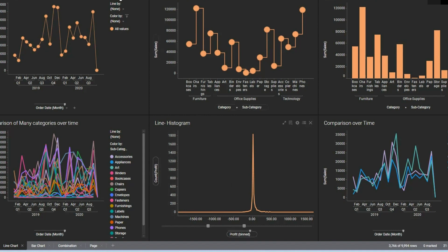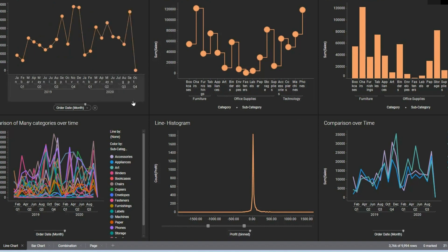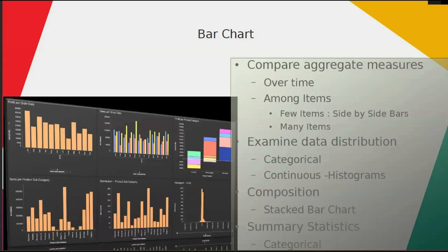The conclusion: the line chart is all about finding patterns in the data. Bar charts are simple visualizations to compare aggregate measures over time or among items. They are used for examining data distributions — categorical or continuous — for comparing compositions as a stacked bar chart, and for providing summary statistics of categorical values. Bar charts are the primary utility for performing volumetric comparisons.